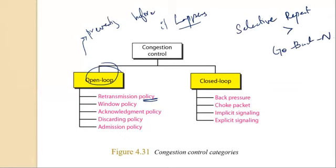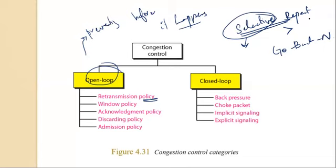The next is window policy — the type of window at the sender may also affect congestion. Selective repeat window is better than go-back-N window. In go-back-N, when a timer times out several packets may be resent even if they arrived safely, which may worsen congestion. Selective repeat windows retransmit only the packets that have been lost or corrupted, so it is always better to use the selective repeat protocol.